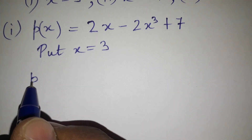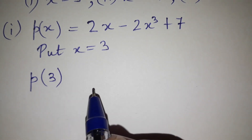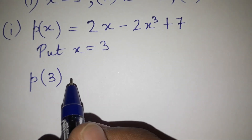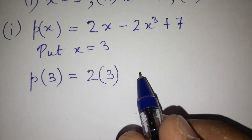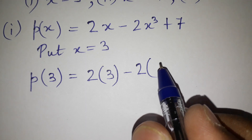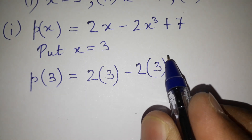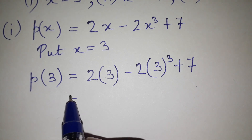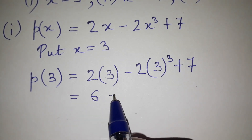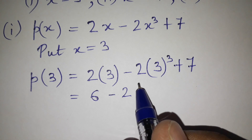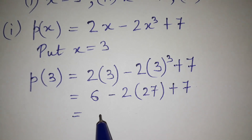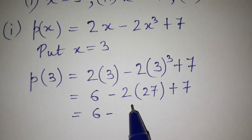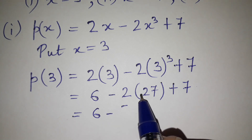Instead of p(x) we write p(3), because we are putting x equals 3. So we get 2 into 3, minus 2 into 3 cube, plus 7. That gives us 6 minus 2 and 3 cube is 27, so minus 2 times 27 plus 7.